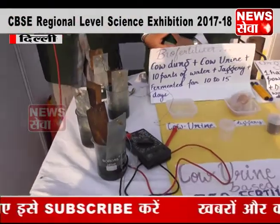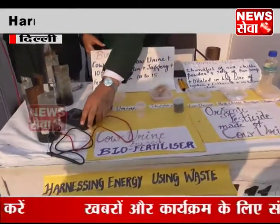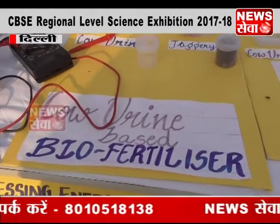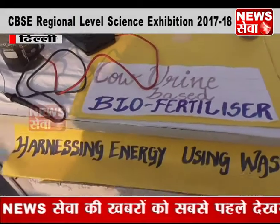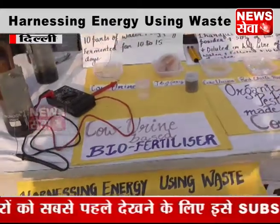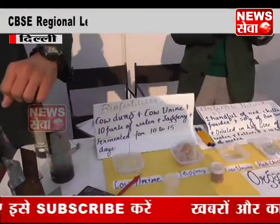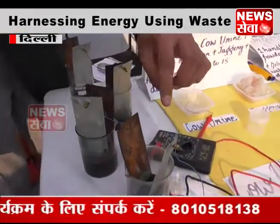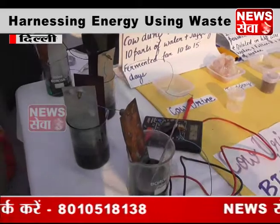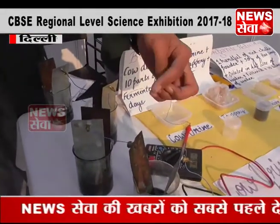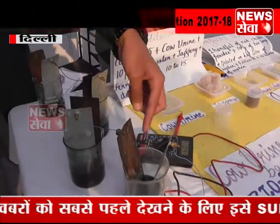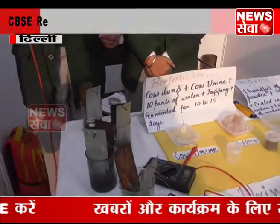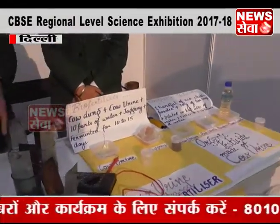Let us talk about generation of electricity using cow urine, which is the most important and most highlighted topic of our model. Cow urine contains uric acid and this uric acid is reacting with the copper electrodes that can be found here. These are the copper electrodes and these are the zinc electrodes. The zinc electrode is acting as the negative electrode while the copper is acting as the positive electrode. Copper is reacting with the uric acid present in the cow urine and forming copper urex, which is being attracted towards the zinc plates. So electrons are flowing and therefore electricity is being produced.